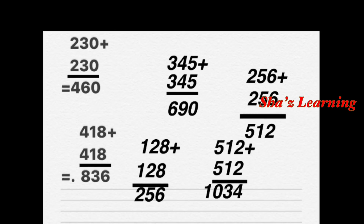Double numbers: 230 plus 230. 0 plus 0 is 0. 3 plus 3 is 6. 2 plus 2 is 4. That is 460. Then 345 plus 345.